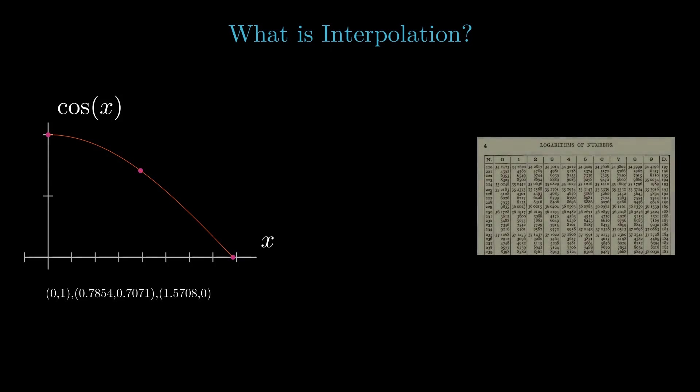Before the advent of calculators, interpolation was frequently used to provide approximations for values of functions that were difficult to calculate by hand. Here we are given three nodes at 0, pi over 4, and pi over 2.